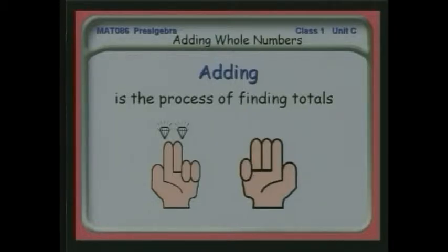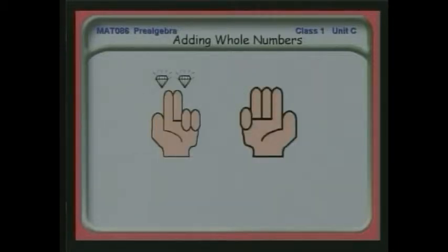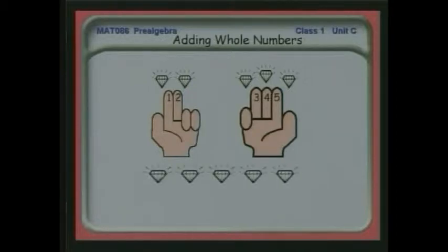If we have, for example, two things and three things, one thing we can do is put them in one-to-one correspondence with our fingers and then count on our fingers. Or we can write this out as the mathematical form: two plus three is equal to five.